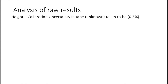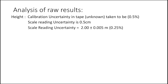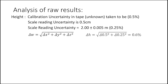For the tape measure, we take the calibration uncertainty to be 0.5%. The scale reading uncertainty is plus or minus half a division — our divisions are centimetres — so plus or minus half a centimetre. For our 2 metre height, that's a scale reading uncertainty of 0.25%. There was no need to repeat the height measurement, so there's no random uncertainty. Combining these two using the Pythagorean method gives an overall percentage uncertainty in height of 0.6%.